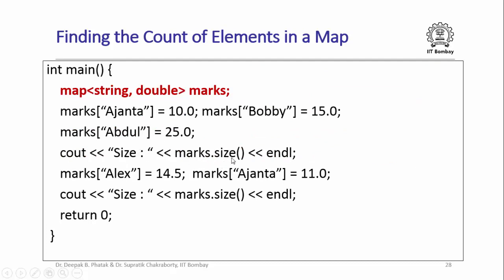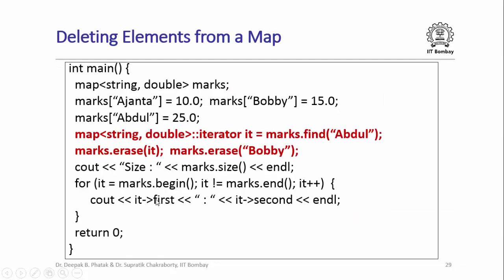To find how many elements are in a map, use the 'size' member function. For example, after creating a map and inserting three elements, marks.size() returns 3. After inserting one more element with key 'Alex', and then doing marks['Ajanta'] = 11.0 — which only updates the existing 'Ajanta' pair rather than inserting a new one — the size becomes 4.